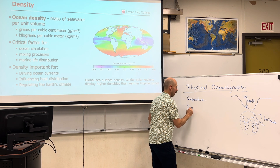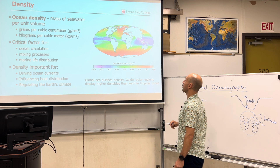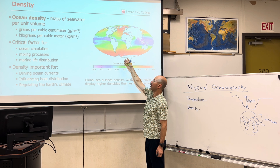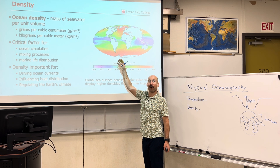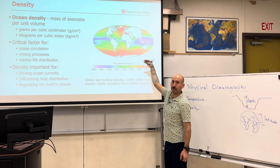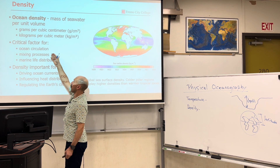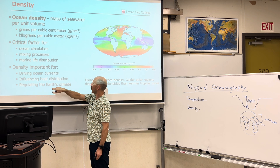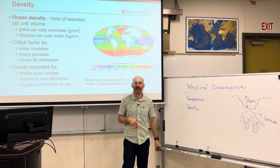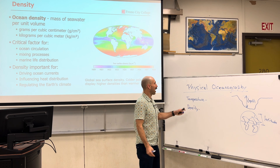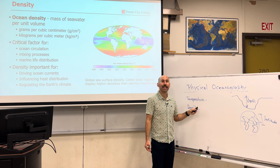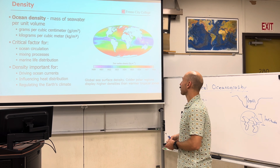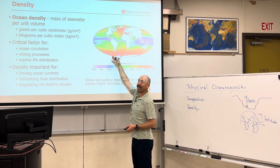Density, by definition, is the mass of seawater per unit volume, and there are trends we can see — including from satellite data showing latitudinal variations. Density is important for ocean circulation, ocean mixing, and marine life distribution. It also drives currents, helps to move heat around, and regulates Earth's climate. So physical oceanography has major impacts on a global scale, both for how Earth's surface works and for all organisms living in Earth's oceans.